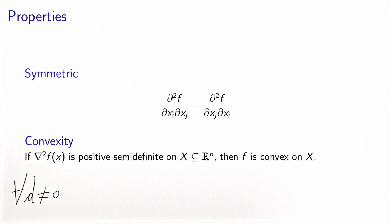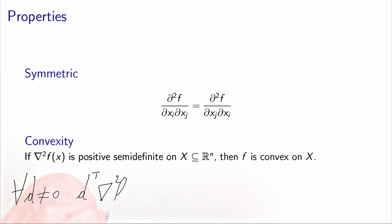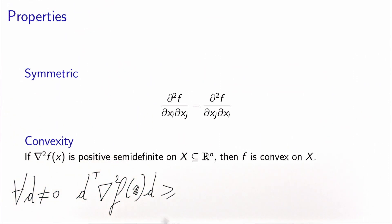...which is non-zero, pre-multiplying the matrix by d and post-multiplying it by d will always provide a quantity which is non-negative. So this is the definition of a positive semi-definite matrix. So if it is verified, then the function is convex.